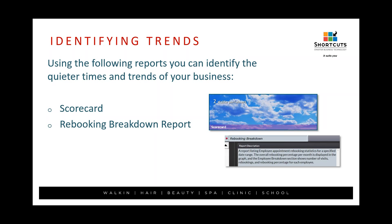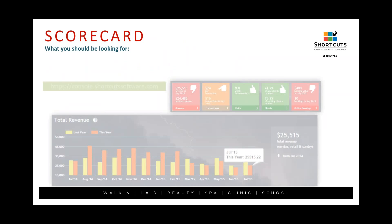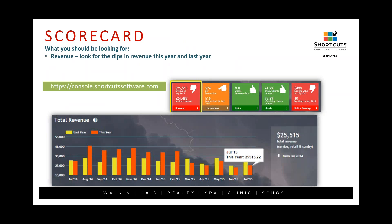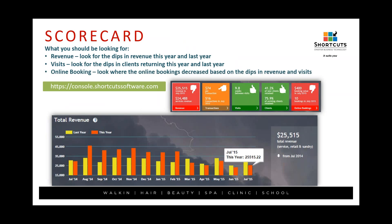Every month you'll be able to see that scorecard and see if the business is going up, down, or holding steady. If you're on the actual Shortcuts program, you can run a report called the rebooking breakdown report, which looks at your employees, their rebookings, and spots a trend — are rebookings increasing, decreasing, or holding steady? Using the online console, you're looking for revenue values, dips, whether customers are returning, and your online booking percentages. As you study these trends year to year, you'll be able to spot how you were performing and identify slow periods.